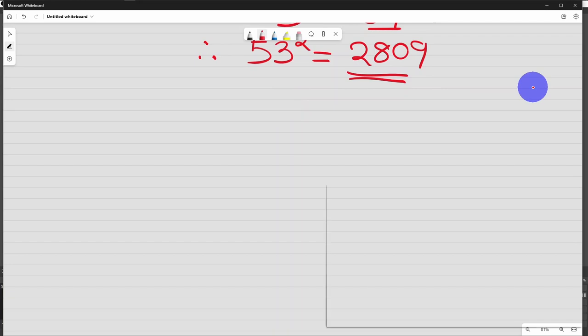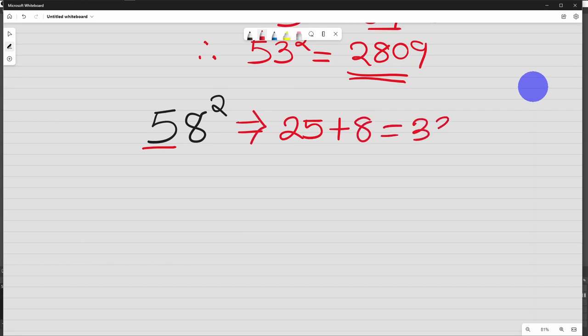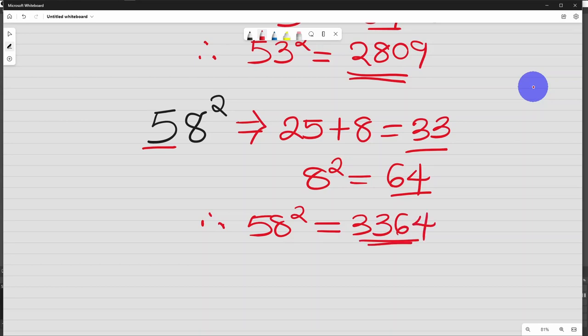Let's look at the square of 58. So 58 square, half of 50 is 25, plus 8. 25 plus 8 is 33. This is the first part of the answer. 8 square is 64. This is the second part of the answer. Therefore, 58 square will be equal to 33, 64. You can confirm it using your calculator.